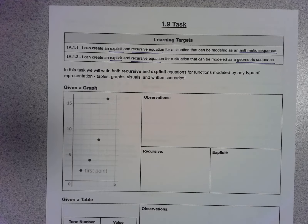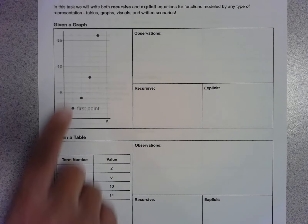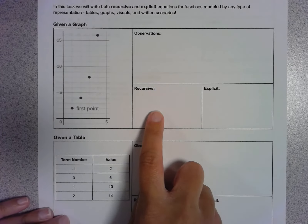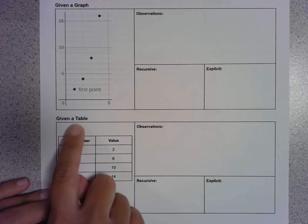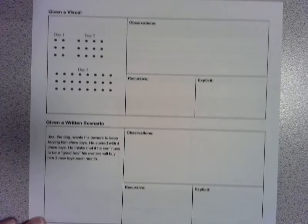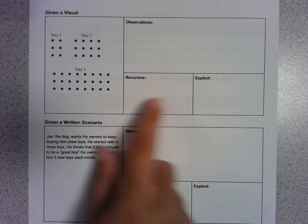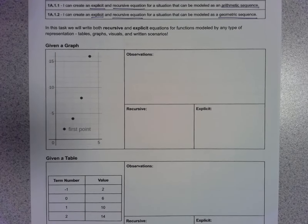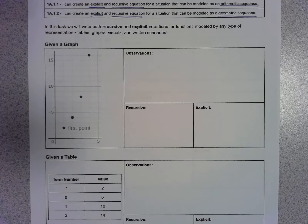Today we're going to go through a few examples where we look at one problem with each of the different representations we've studied. As a preview: we'll look at what to do if given a graph, a table, a visual, or a scenario, and how to write recursive and explicit equations for each. This is a recap, but the difference today is that we're writing both kinds of equations at the same time and looking at every type of representation.